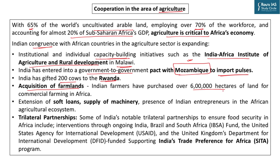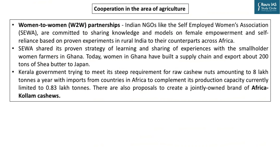There has been increased presence of Indian entrepreneurs in all areas of the African economy, including agriculture. The Indian government gives soft loans, lines of credit, and machinery for agricultural development in Africa. India is also involved in trilateral partnerships — for example, using the IBSA fund with Brazil and South Africa to develop agriculture and ensure food security. Similarly, USAID and the UK's DFID have funded the Supporting India's Trade Preference for Africa (SITA) program.